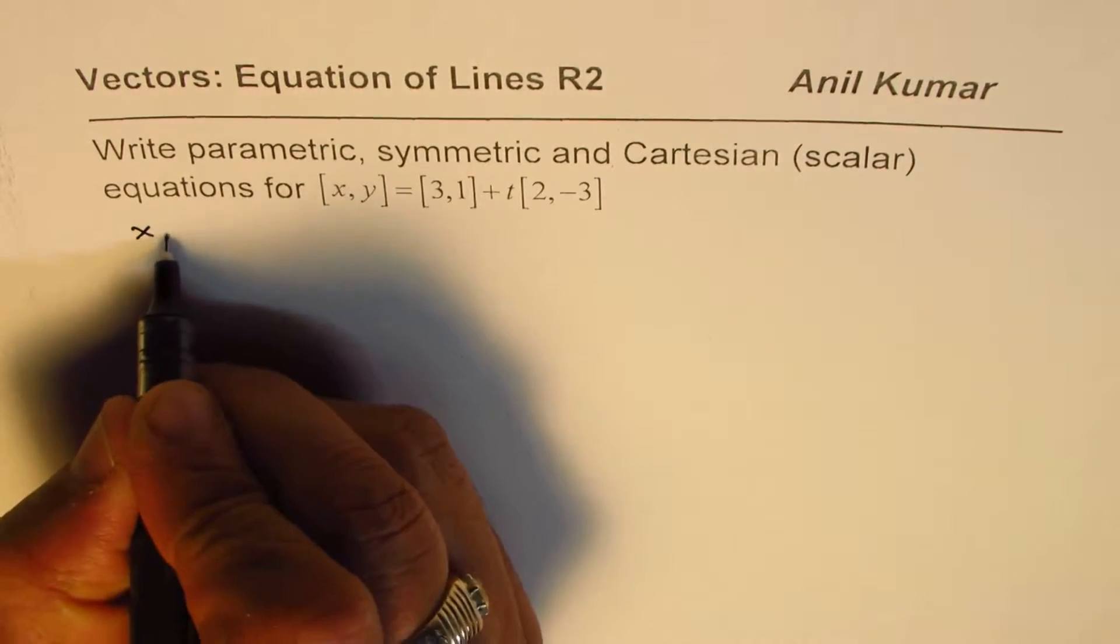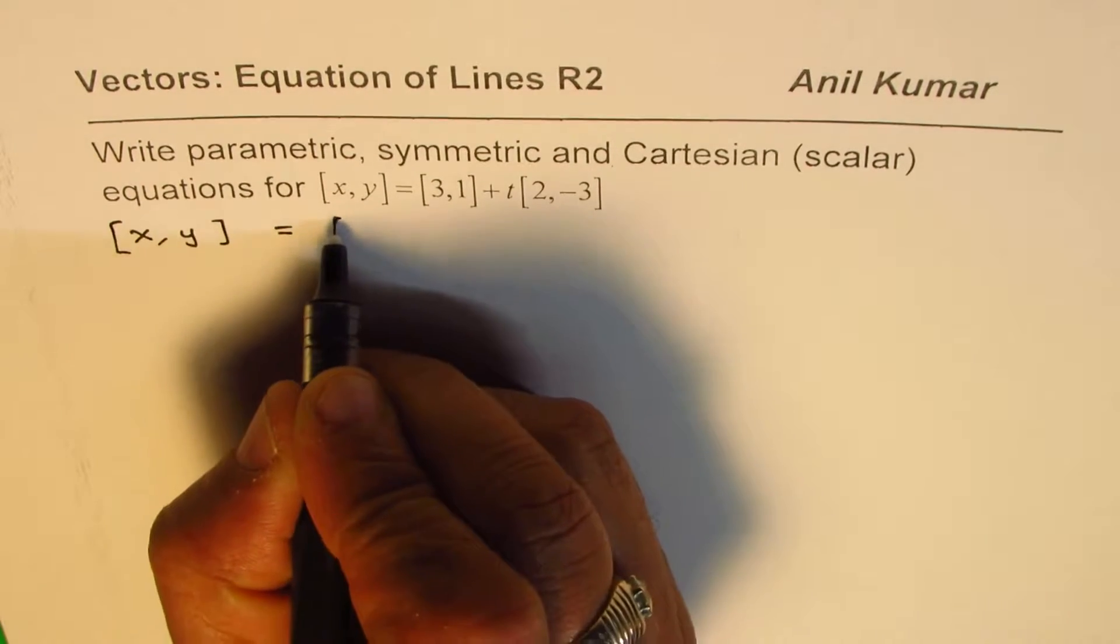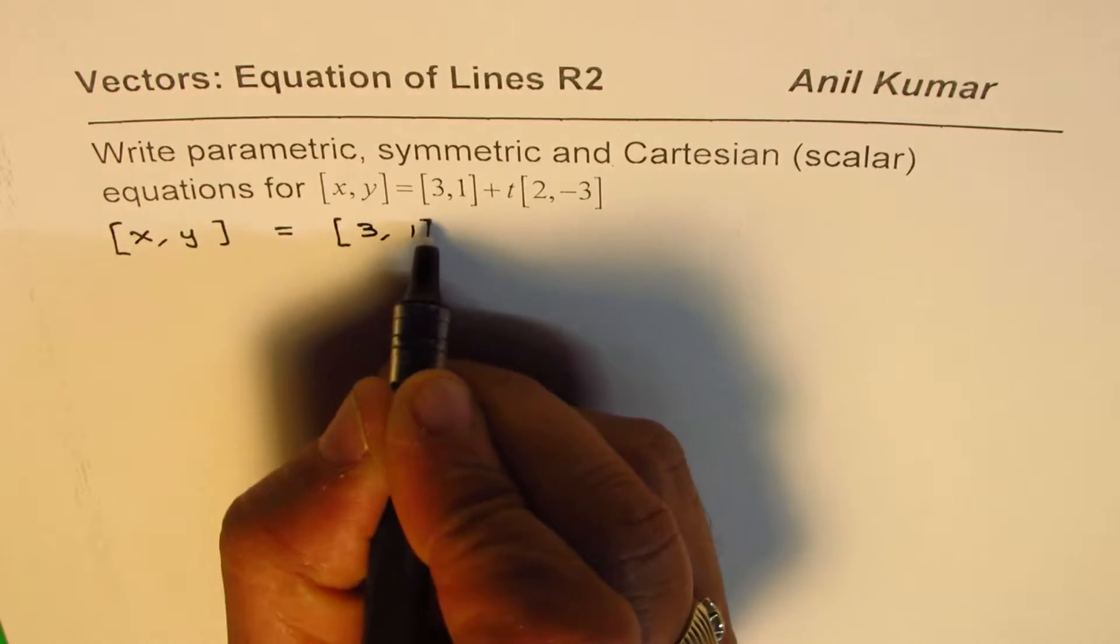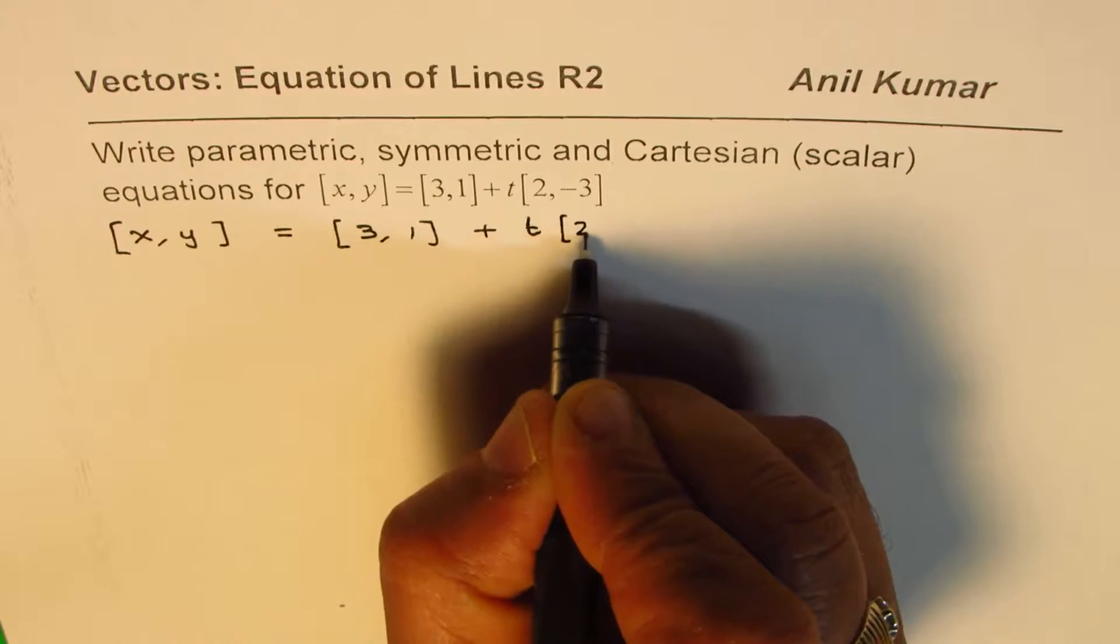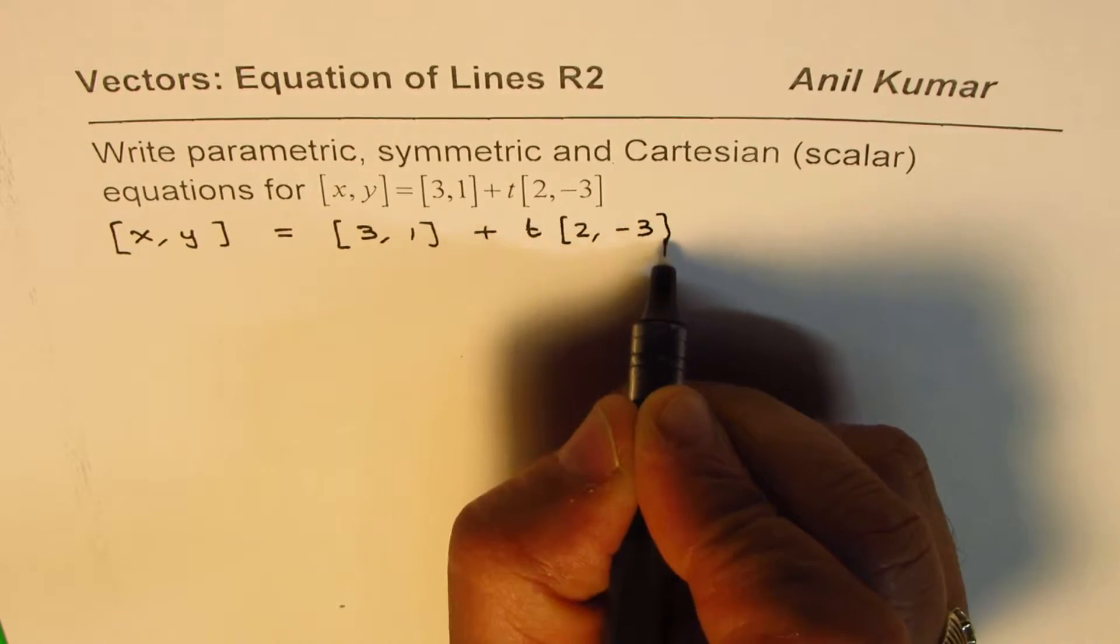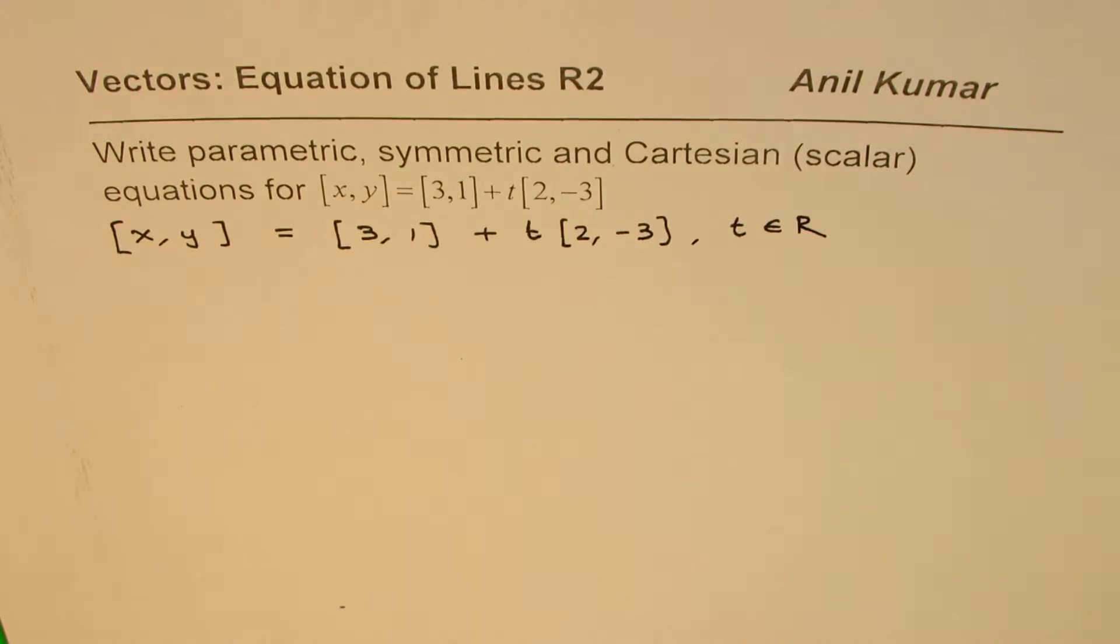What we are given here is the vector equation: x, y is equal to [3, 1] plus the parameter t[2, -3]. Now here t always belongs to real numbers.